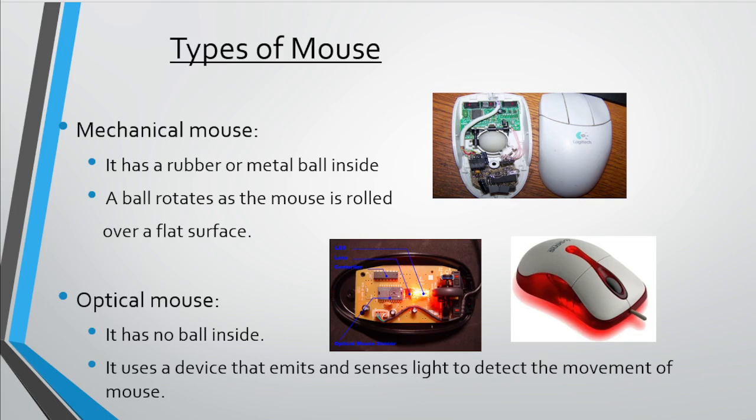Next is optical mouse. Optical mouse has no ball inside it. It uses a device that emits and senses light to detect the movement of the mouse.